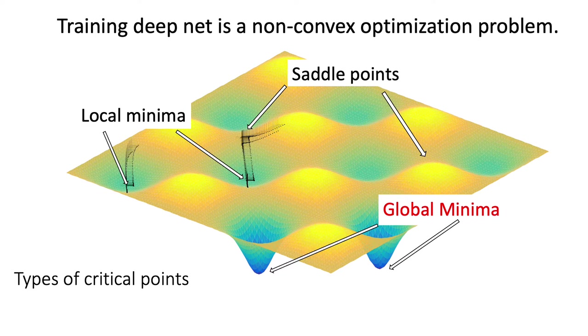Because if you initialize at a different place on this landscape, you would converge to either a saddle point, a local minimum, or a global minimum.